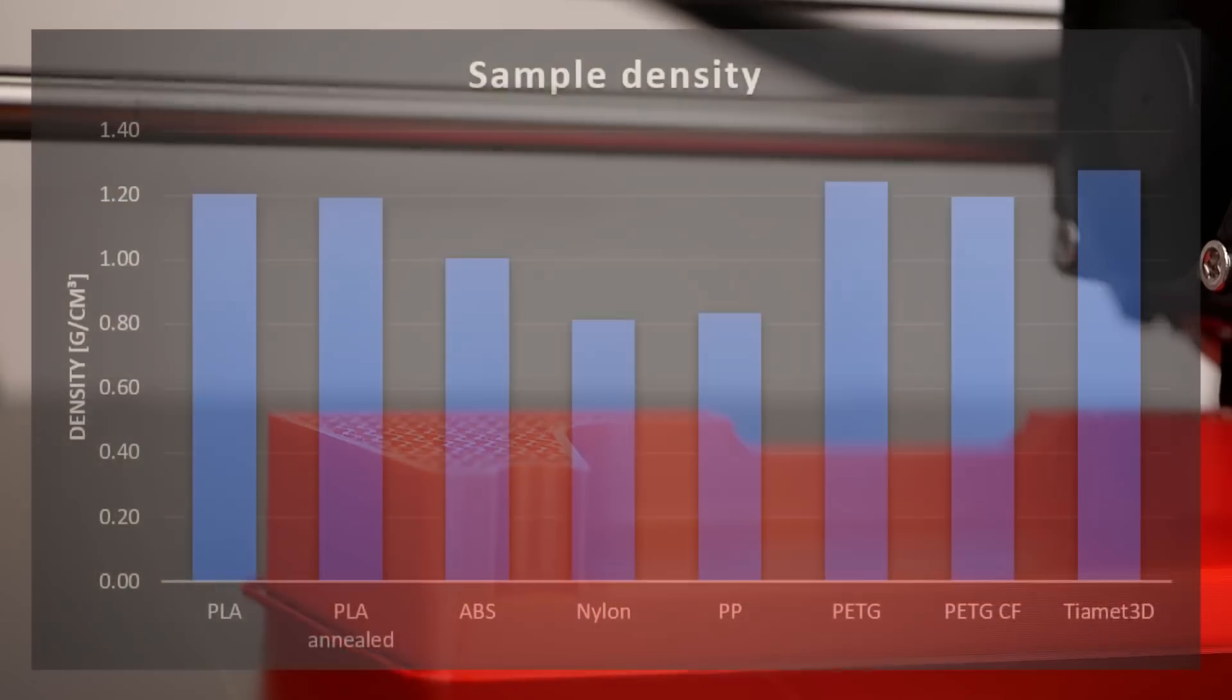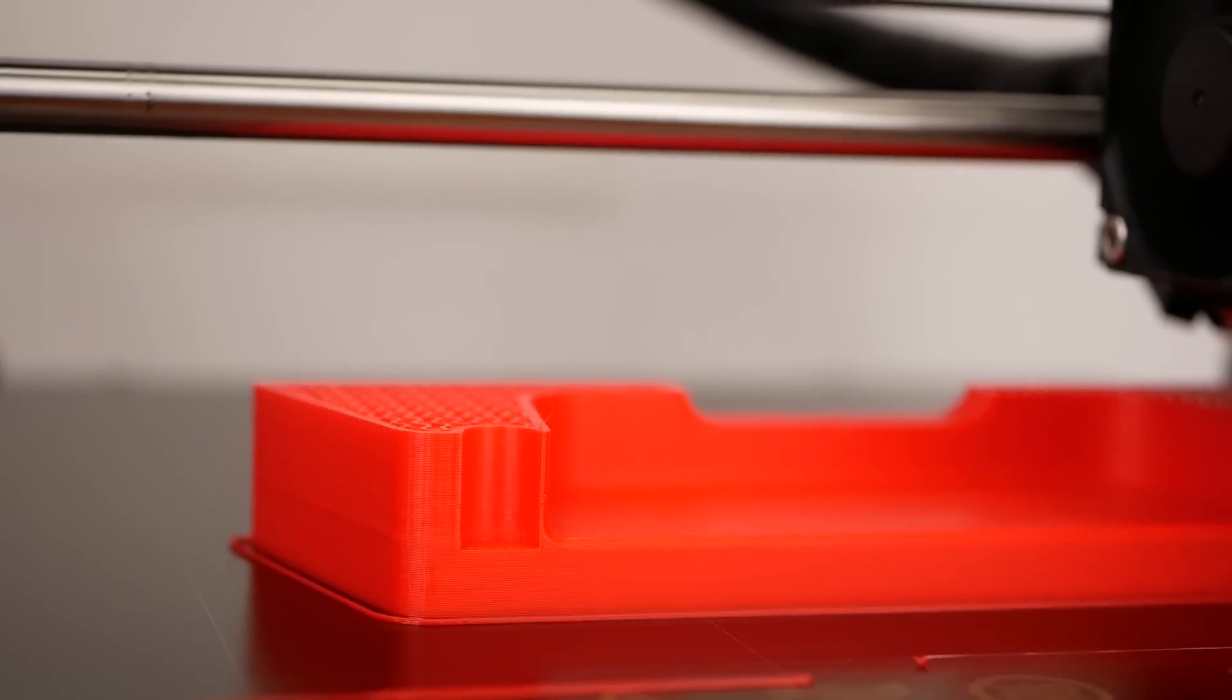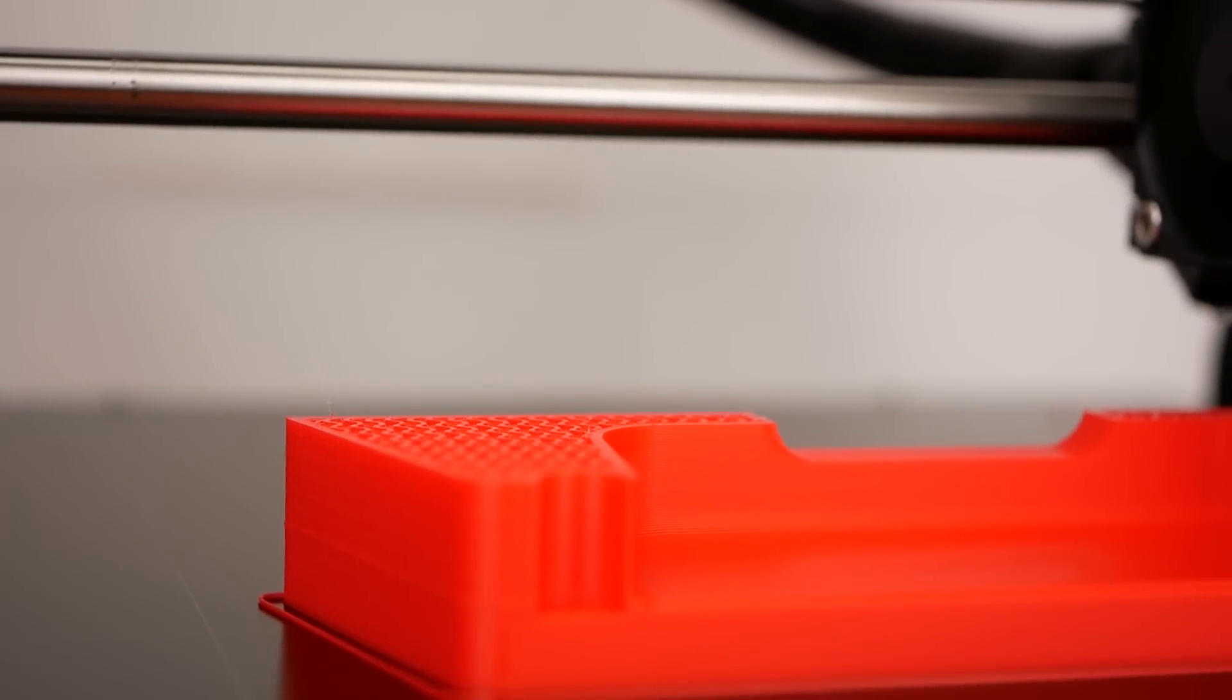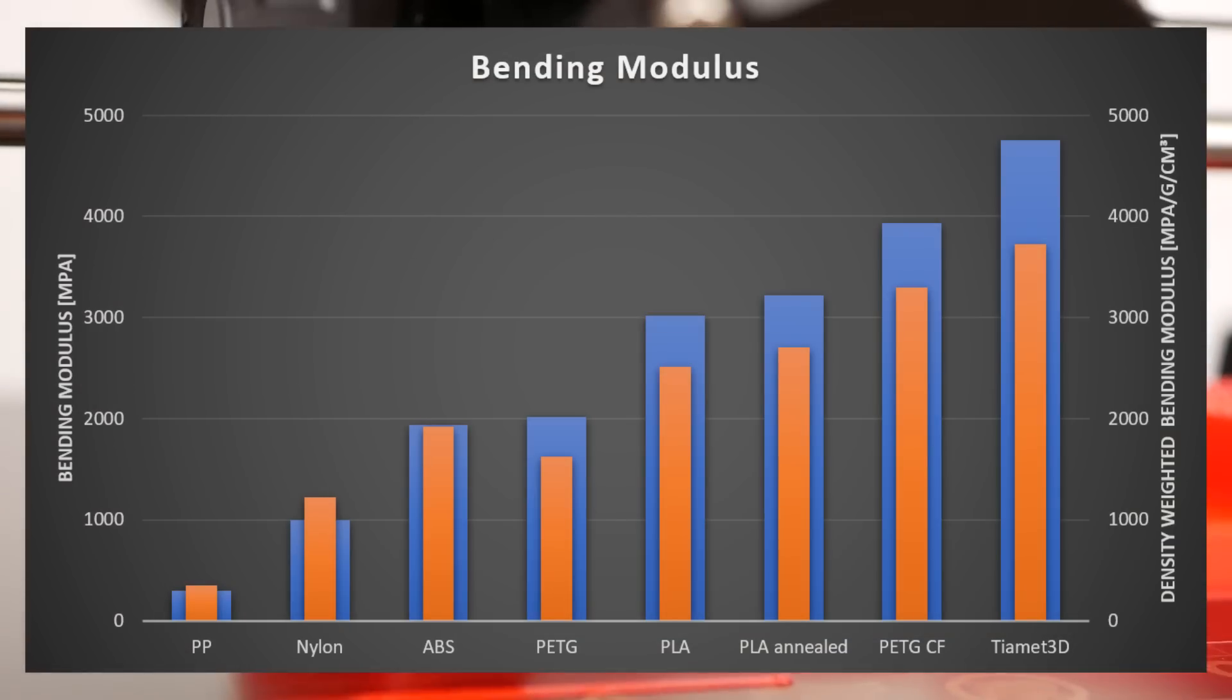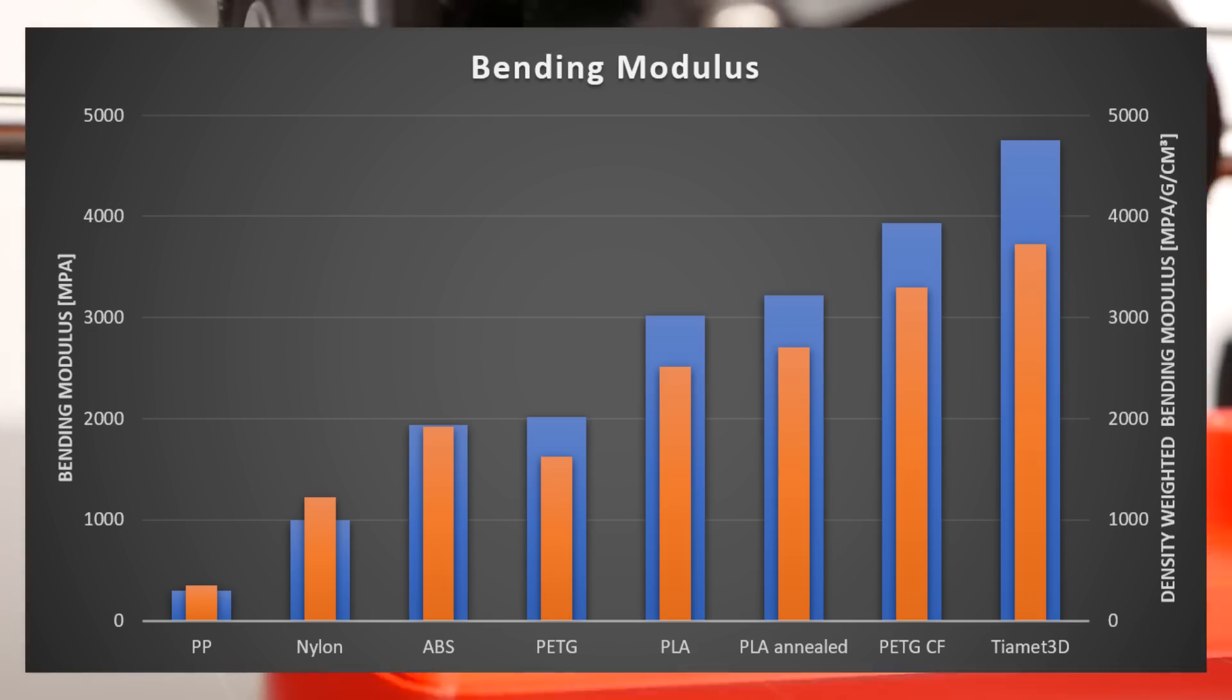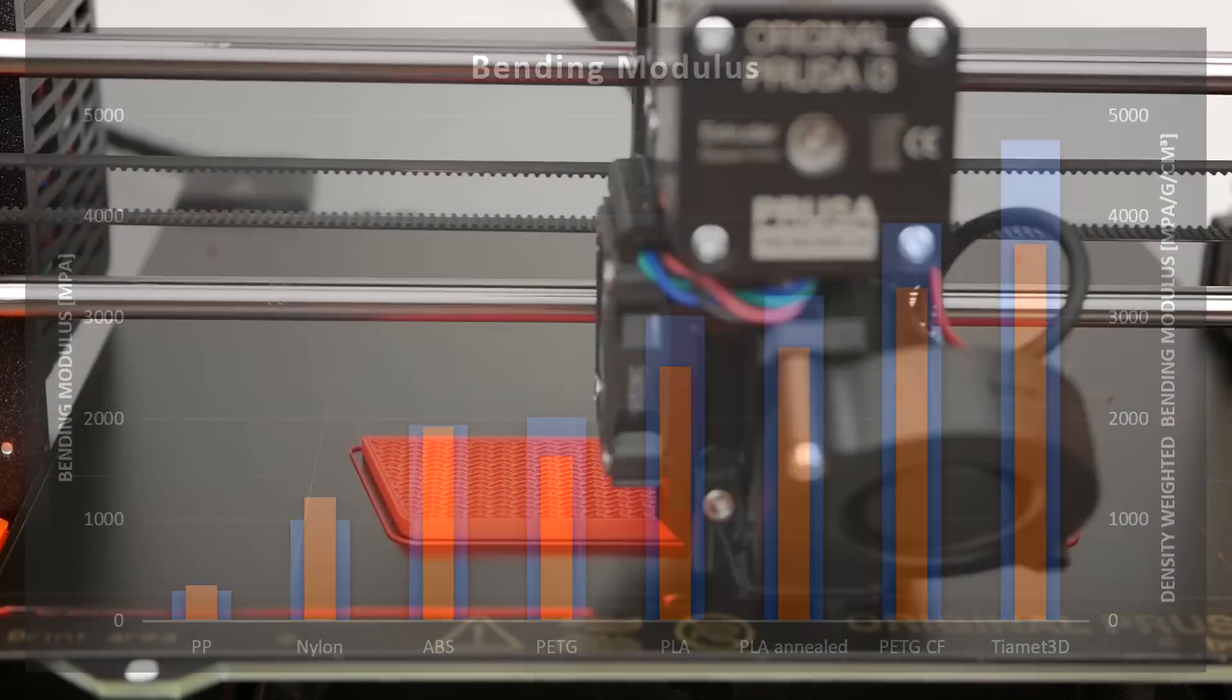I told you in the beginning that I also weighed the samples to calculate the density. If you want to have a lightweight structure that is stiff, you might be interested which material gives you the maximum amount of stiffness with the least weight. The orange bars in this plot show the weighted stiffnesses by density, where some small things change because nylon, due to its lower stiffness, gets a little better, and PETG loses in comparison to ABS due to its higher density. The rest stays pretty much the same and the reinforced materials still win.